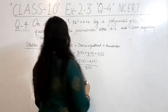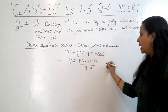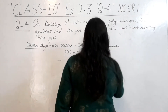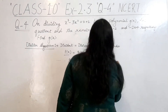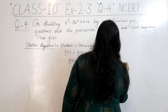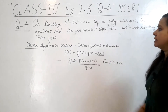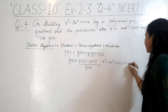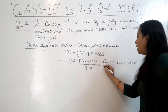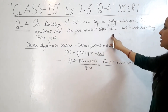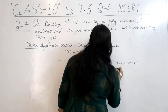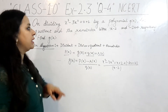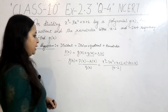We know that p(x), the dividend, has value x cubed minus 3x squared plus x plus 2. The remainder r(x) is minus 2x plus 4, and the quotient q(x) is x minus 2. The quotient and remainder were x minus 2 and minus 2x plus 4 respectively.